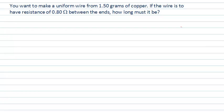This viscast is going to look at the resistivity of a piece of material and how to calculate the resistance of a particular arrangement. The question is asking for the length of a uniform wire made from a particular amount of a material, in this case copper, and there is a desired resistance between the ends of this wire.